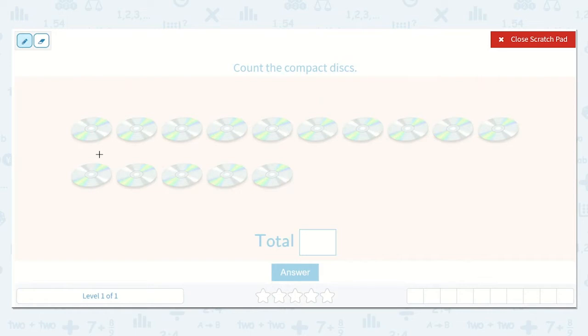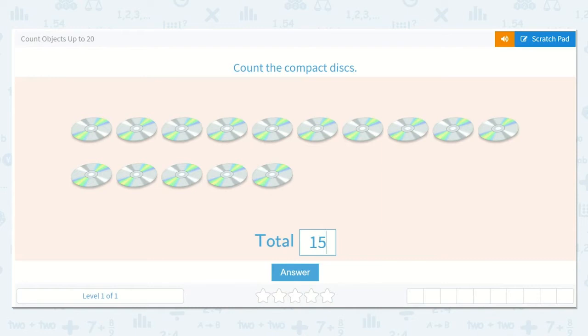I'll put a line under each one as I go. 1, 2, 3, 4, 5, 6, 7, 8, 9, 10, 11, 12, 13, 14, 15. I see 15. Great! 15 is a 1 and a 5.